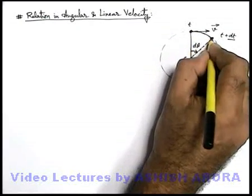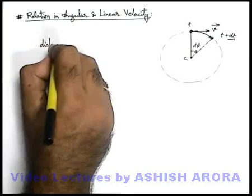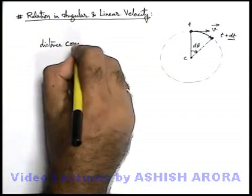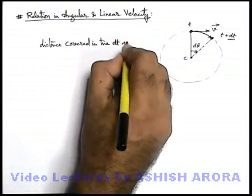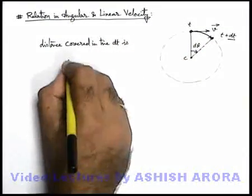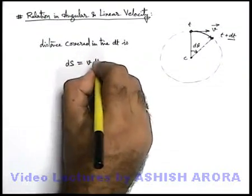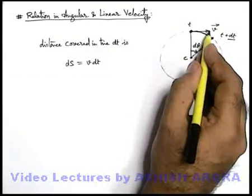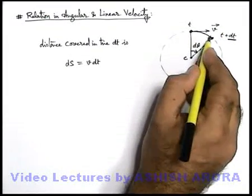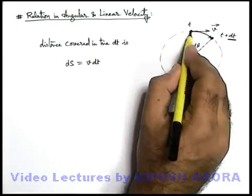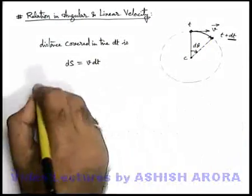The distance which it will travel can be directly written as: if we consider the distance covered in time dt is ds, this can be written as v dt. Even if the velocity is varying, we can consider that dt is such a small duration in which the velocity magnitude remains constant. So this distance traveled by the particle can be written as v dt.